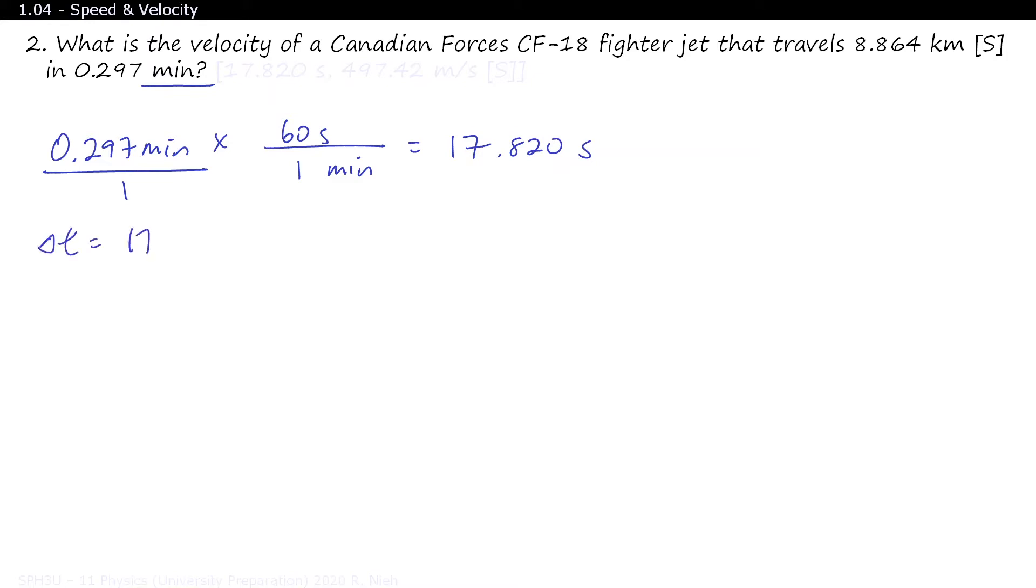So your time equals 17.820 seconds, and your distance, you can mentally convert this into meters, which is 8.864 meters south. We're trying to look for speed, or velocity in this case. Velocity equals displacement over time. So 8.864 meters south divided by 17.820 seconds. That will give us an answer initially of 497.42 meters per second south.